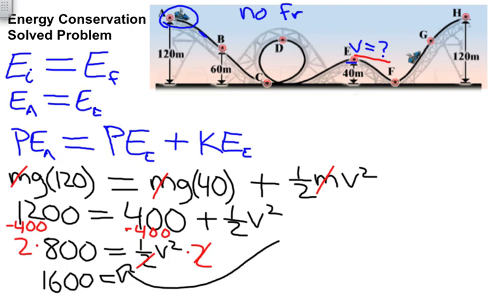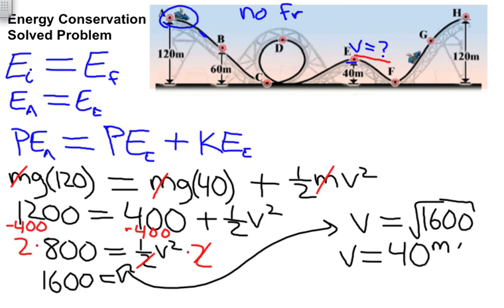We take the square root of both sides, so we get v equals square root 1600, and therefore v is equal to 40 meters per second. And that's the speed that the roller coaster is moving at point e.